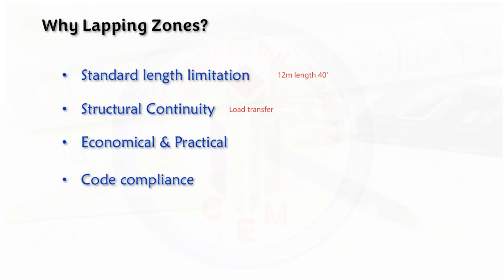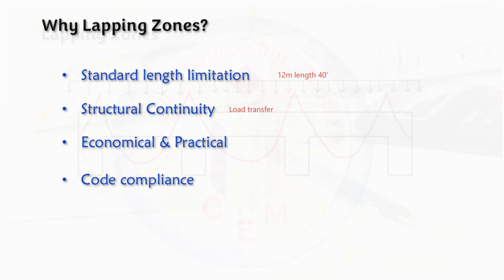The last one is code compliance. As per IS Code IS 456-2000 and SP 34, and we have the ductile detailing code IS 13920, these codes allow lapping. Minimum lap length is typically 40 times the bar diameter or more, depending on the bar size and location, whether it is in the tension zone or in the compression zone.